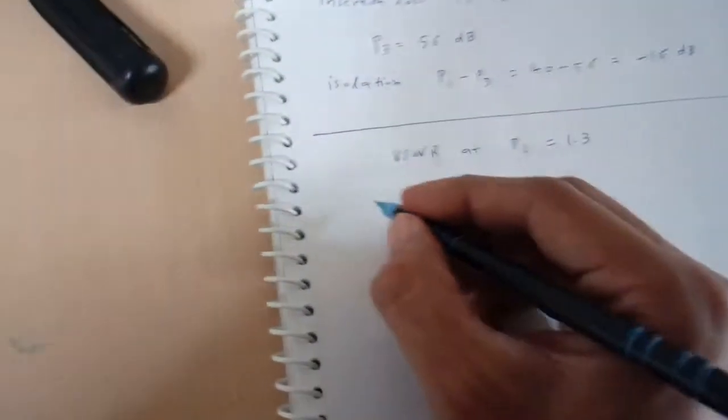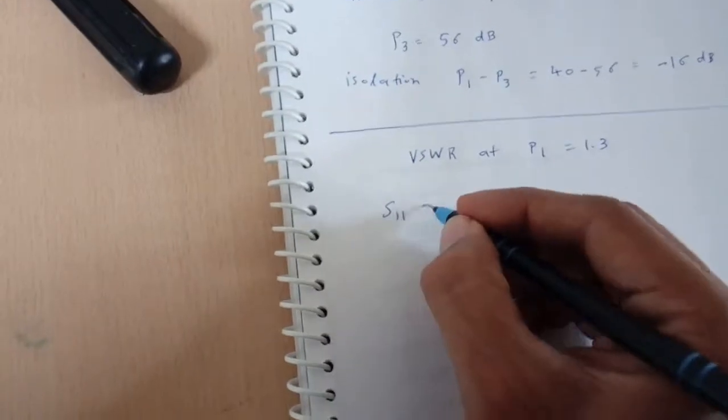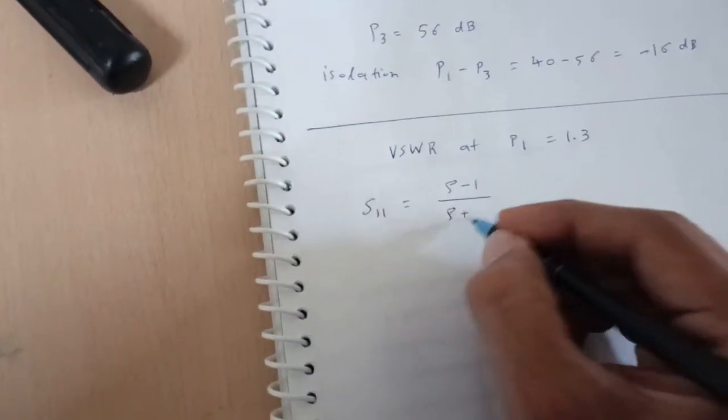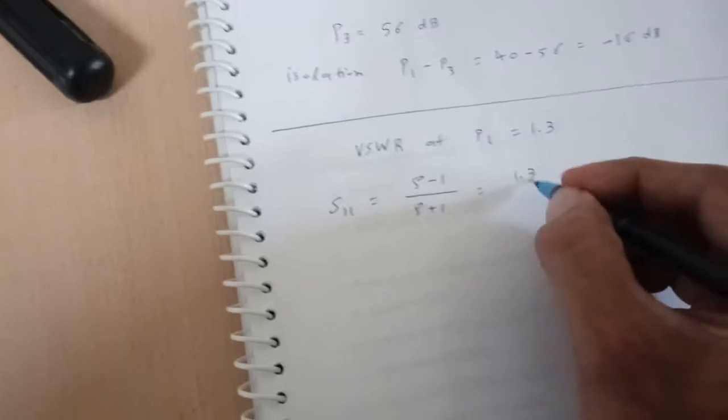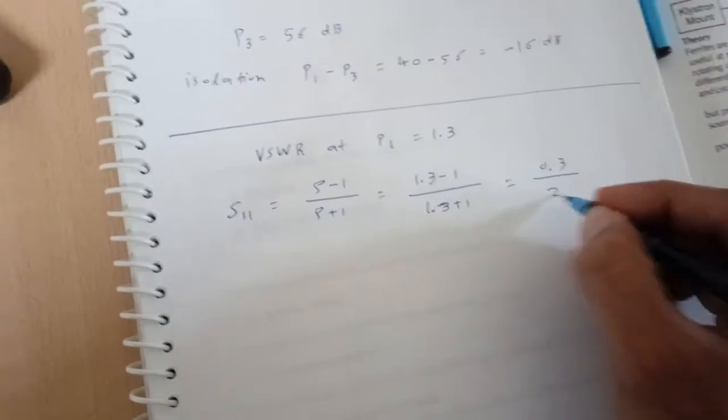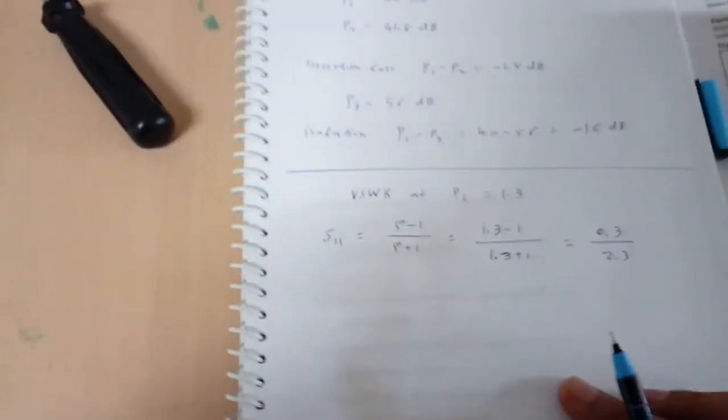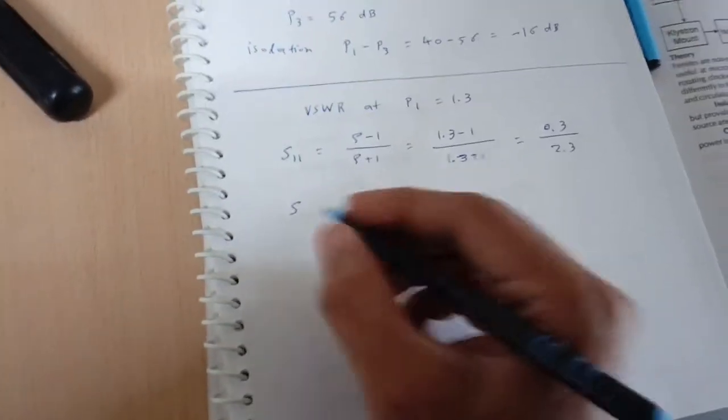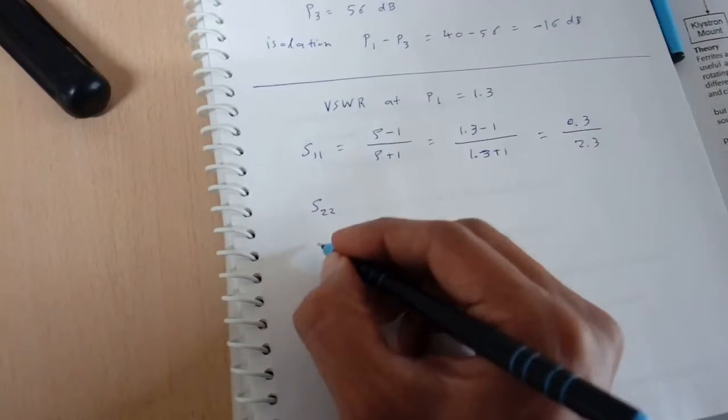So from this we can find out the S parameter. S11 can be given by rho minus 1 divided by rho plus 1. That is 1.3 minus 1 divided by 1.3 plus 1. So from this we will get the value of S11. This is the way we can check the S parameter at each port S22, S33, etc., the value of S12. Thank you.